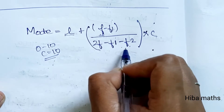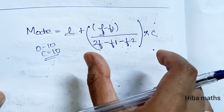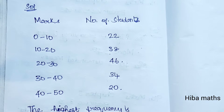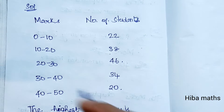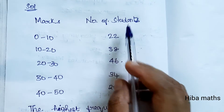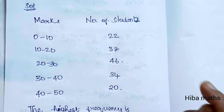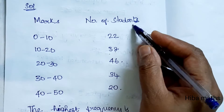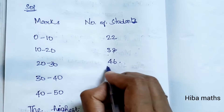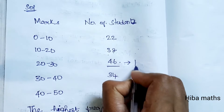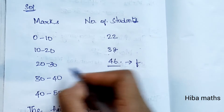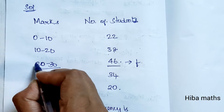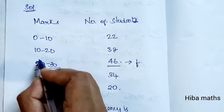So we can use this formula to solve the problem. Looking at the table, the highest frequency is 46, which belongs to the class 20 to 30. So the modal class is 20 to 30, and the lower limit L is 20.